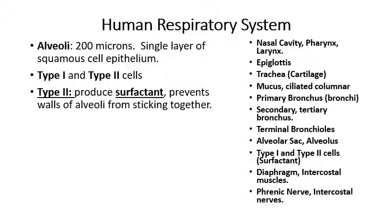About one out of every five of those squamous cell epithelia is classified as a type two cell, which produces a fluid called surfactant. Surfactant is a liquid that contains a little bit of protein and it prevents the walls of the alveoli from sticking together.